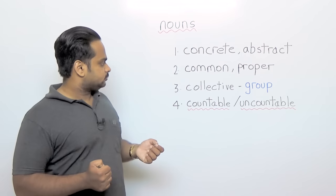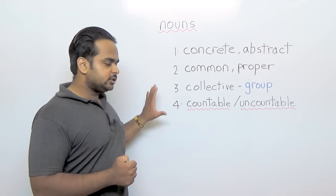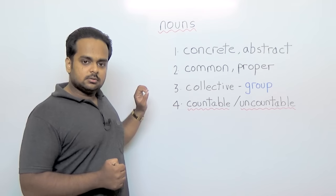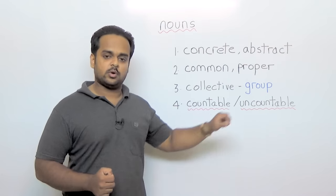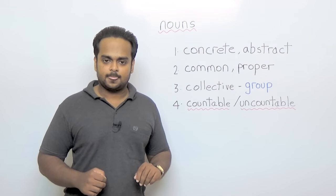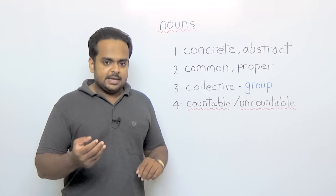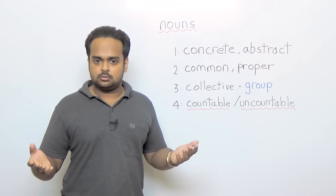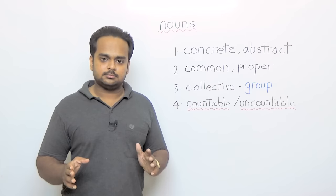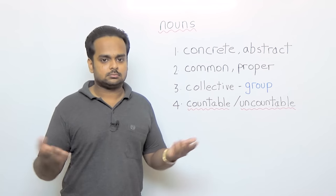Alright, let's now move on and talk about the most important area relating to nouns, and that is countable and uncountable nouns. That's why I've underlined in red, because they're so important. Do you know the meaning of countable noun? A countable noun is a noun that can be counted, and an uncountable noun cannot be counted.